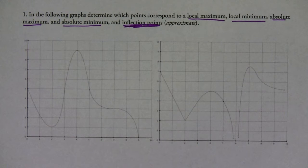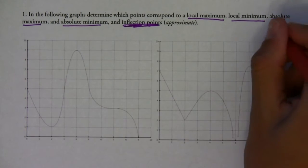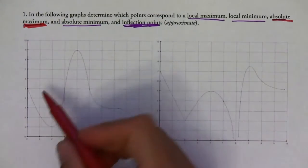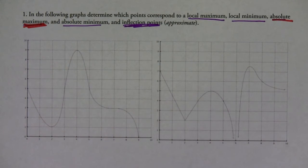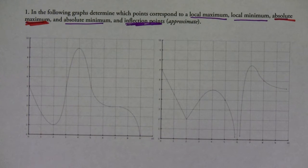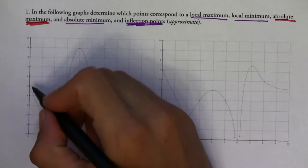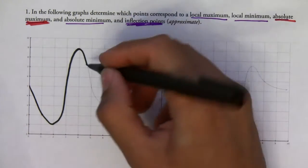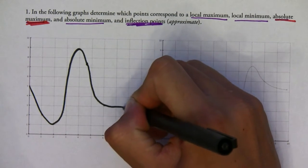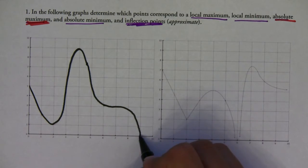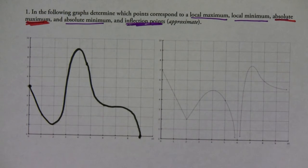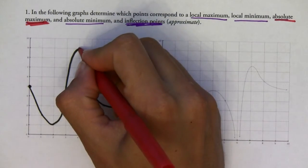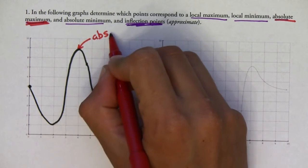Let's first do the absolute maximum and absolute minimum for both graphs. The absolute maximum I'm going to paint in red. If you take a look at this first graph, the absolute maximum — you just look at what the largest value of your graph is. Here the graph stops at these endpoints, and right here is where the absolute maximum is.